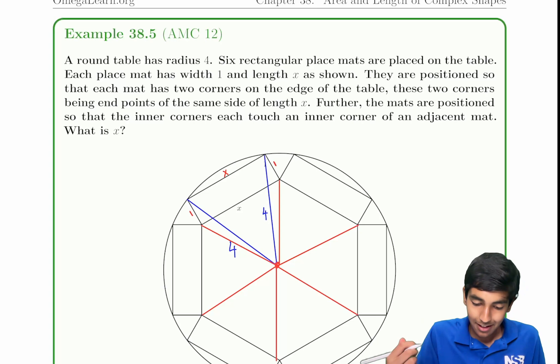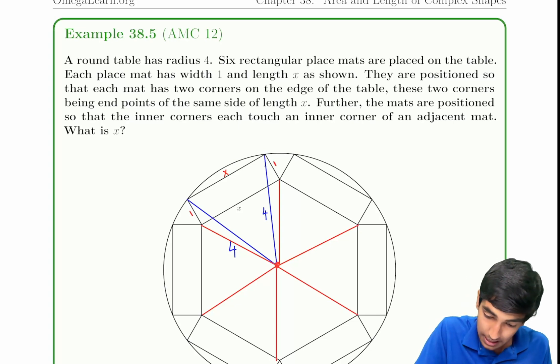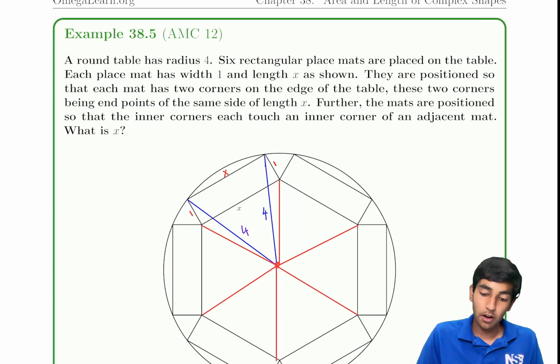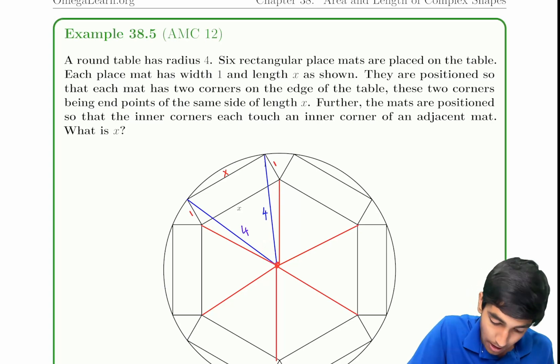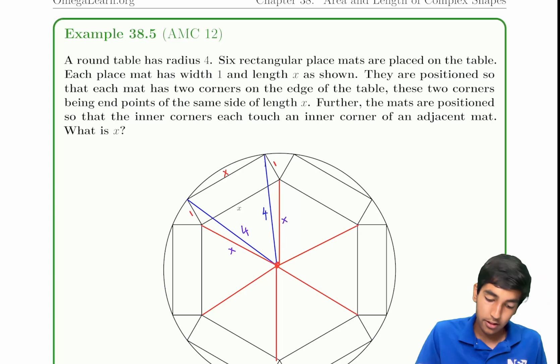That means it's an equilateral triangle for the sum of the angles to be 180. That means x is simply going to be equal to this red length. These two red lengths are equal by symmetry, because it's an isosceles triangle. These two angles are 60 as well. So we can label x, x, x.